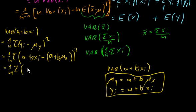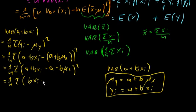Again, sum a plus b x_i minus a minus b μ_x, and squared. And we see a minus a is 0. And we keep on going. Sum of b x_i minus b μ_x squared. And we see that.